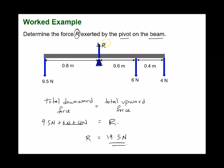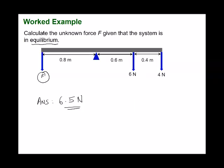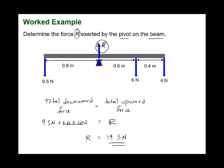In most cases we ignore the pivot force R in moment calculations because R acts directly on the pivot. This means the perpendicular distance from R to the pivot is zero, so R contributes no moment. Since it has no turning effect, it does not need to be included when calculating clockwise or anti-clockwise moments.